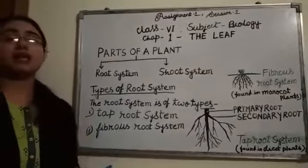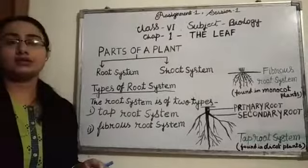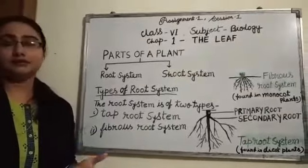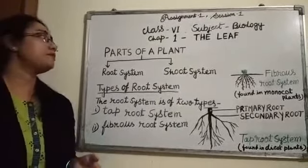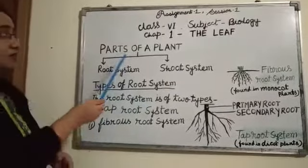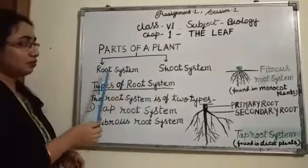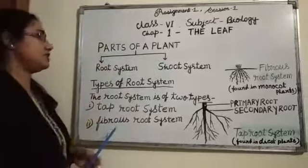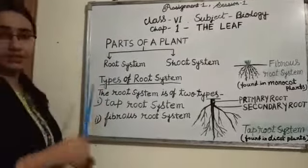Plants have roots, stem, buds, flowers, and fruits. So parts of a plant: root system and shoot system.